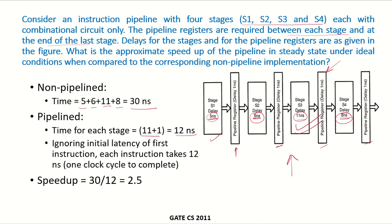If we ignore the latency of the first instruction, then each subsequent instruction takes 1 clock cycle to complete. That is the ideal CPI, clock cycle per instruction is 1 clock cycle and 1 clock cycle is 12 nanoseconds, so each instruction will take 12 nanoseconds to complete. What will be the speedup? Non-pipelined implementation was 30, pipelined implementation each instruction requires 12 nanoseconds, so 30 upon 12 speedup will be 2.5.